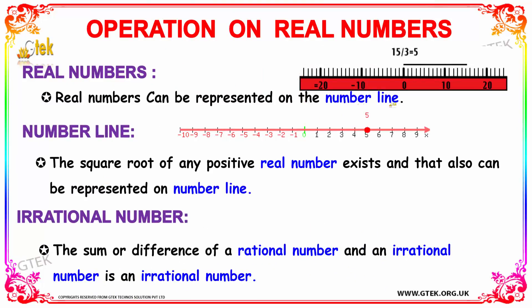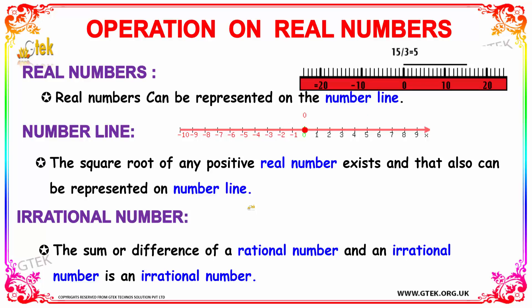Real numbers can be represented on the number line. The square root of any positive real number exists and can also be represented on the number line. Regarding irrational numbers, the sum or difference of a rational number and an irrational number is considered to be an irrational number. These are the points which will help you to solve problems.